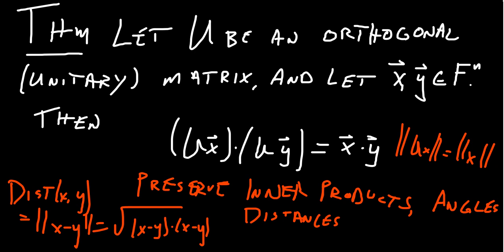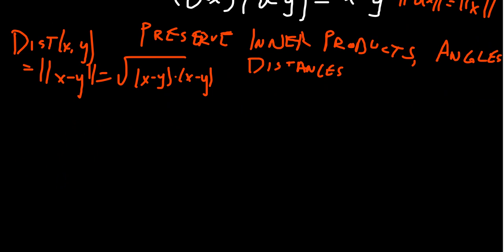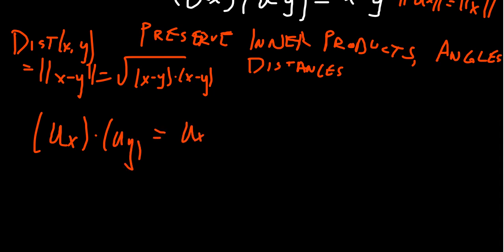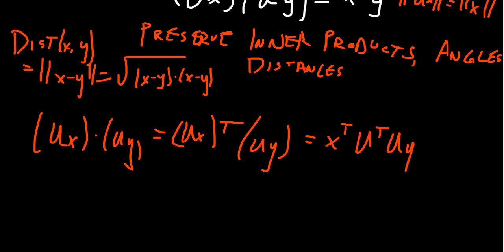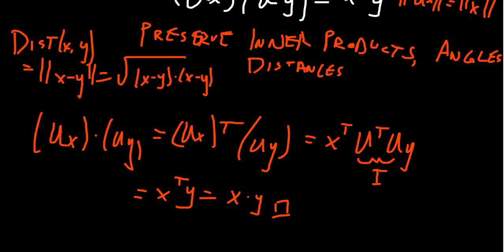The proof is straightforward. Start with Ux dot Uy, which equals (Ux)^T(Uy) for real matrices — use the conjugate transpose for complex. By properties of the transpose, this equals x^T (U^T U) y. Since U is orthogonal, U^T U equals the identity, so this simplifies to x^T y, which is the inner product x dot y. Orthogonal matrices don't change inner products.